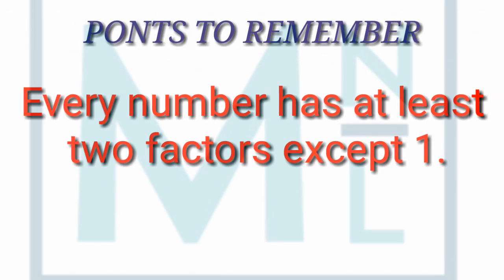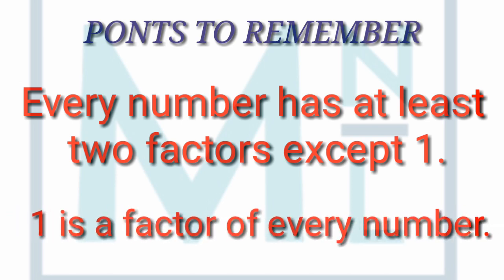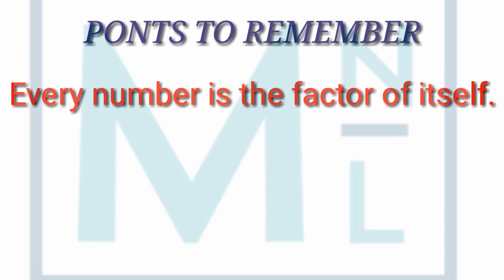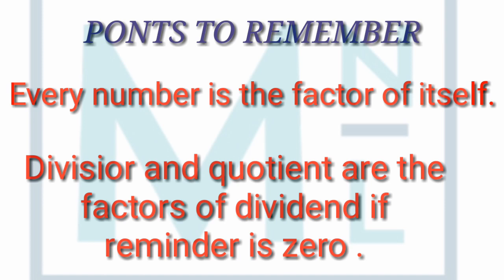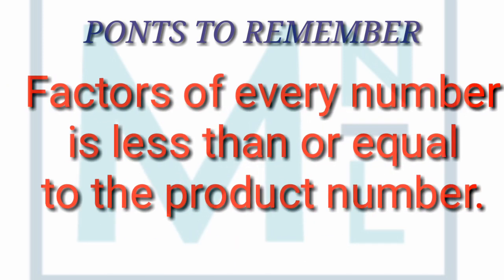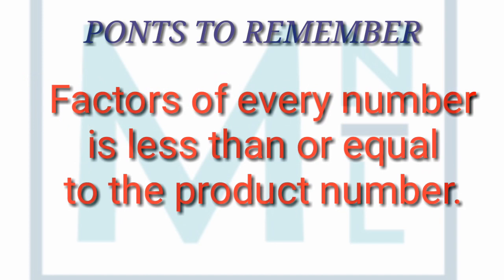So today we learned: Rule 1 — every number has at least two factors except one. Rule 2 — one is a factor of every number. Rule 3 — every number is a factor of itself. Rule 4 — the divisor and quotient are factors of the dividend if the remainder is zero. Rule 5 — factors of every number are less than or equal to the product number, meaning factors will be smaller than or equal to that number.